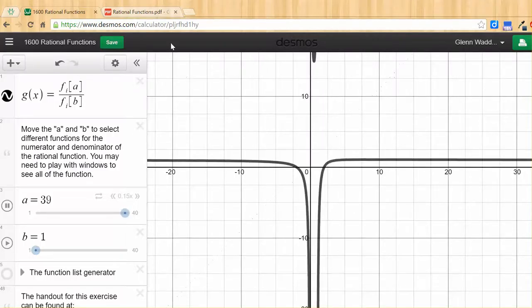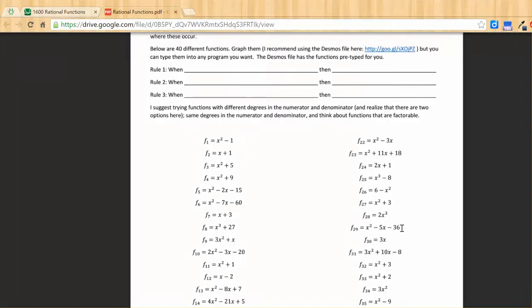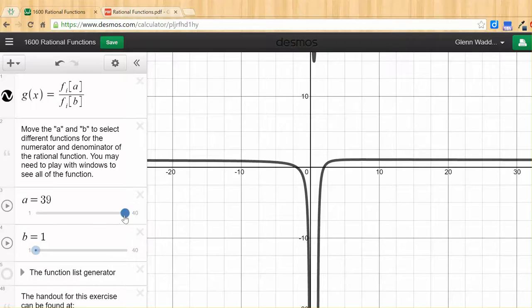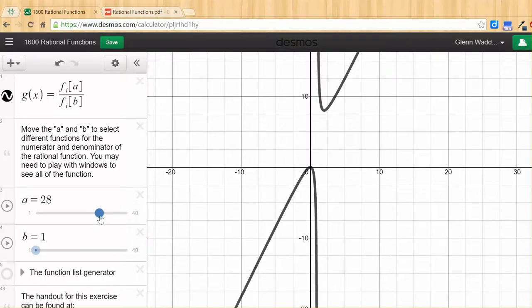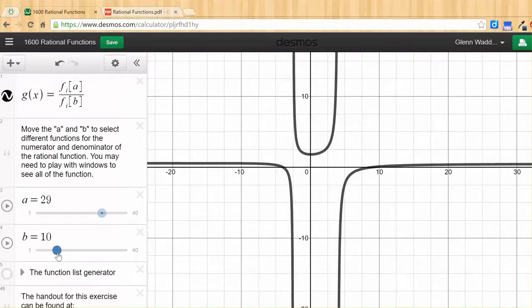And you know you've got it right when you can start here, take x squared minus 5x minus 36 divided by 2x squared minus 3x minus 20. So f29 divided by f10. And predict that it will be in three pieces with the horizontal asymptote at 1 and vertical asymptotes at negative 2 and positive 3. That's the goal.